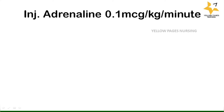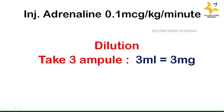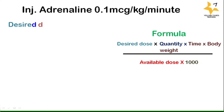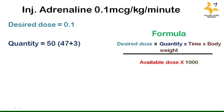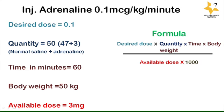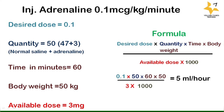Applying Example 1 into the formula — injection adrenaline 0.1 microgram per kg per minute: for dilution we take 3 ampoules, that is 3 ml containing 3 mg, plus 47 ml of normal saline. The desired dose is 0.1, quantity is 50 ml, time in minutes is 60, body weight is 50 kg (for example), and the available dose is 3 mg. Applying all values into the formula, we get the answer: 5 ml per hour.